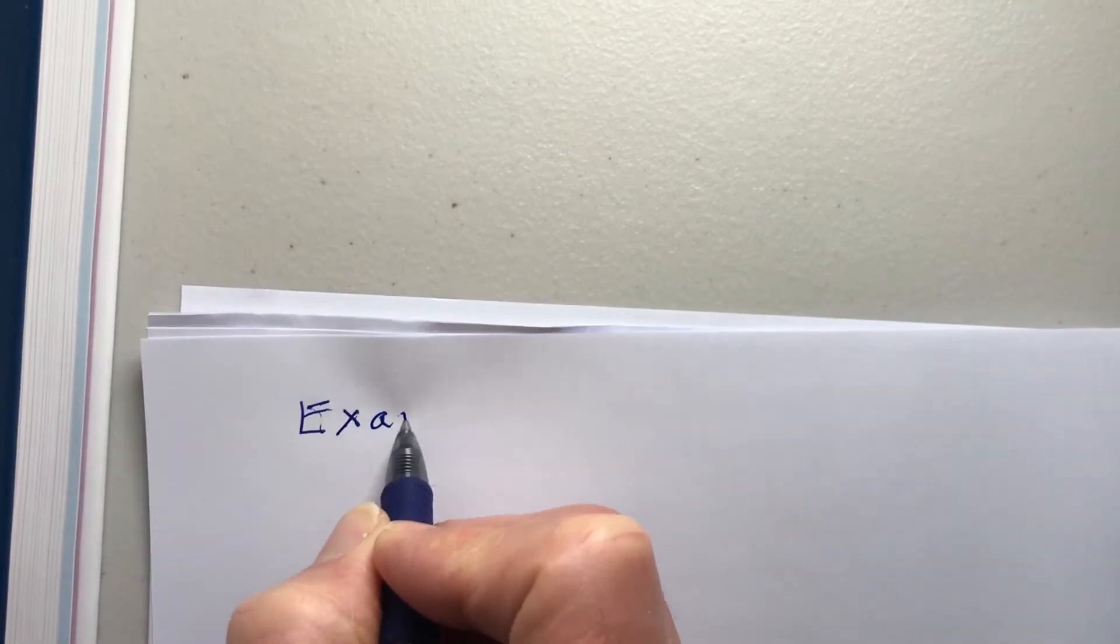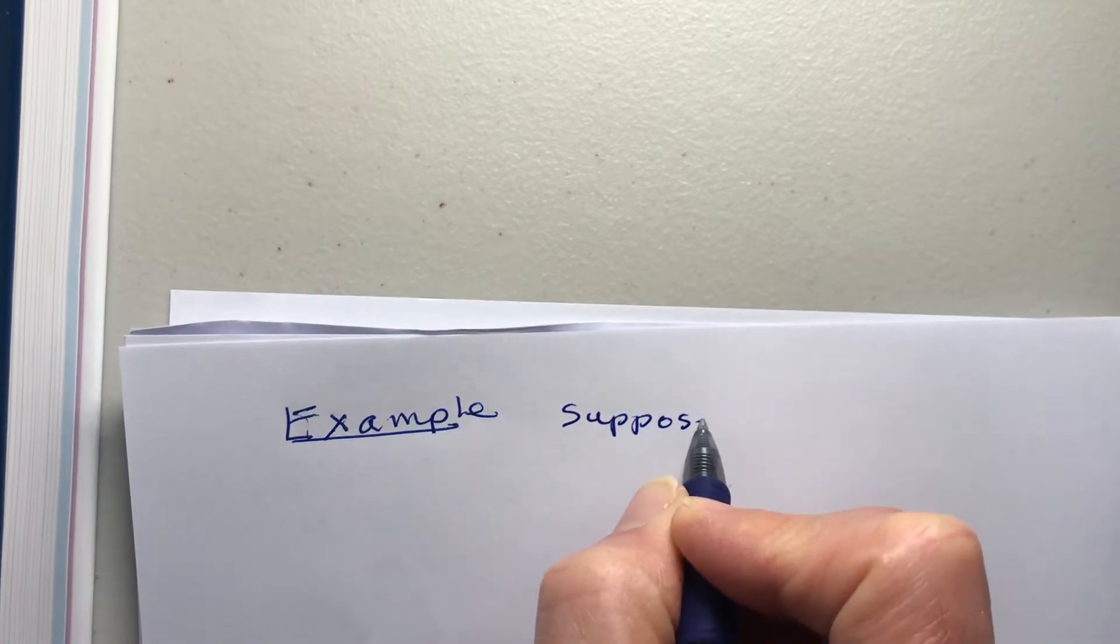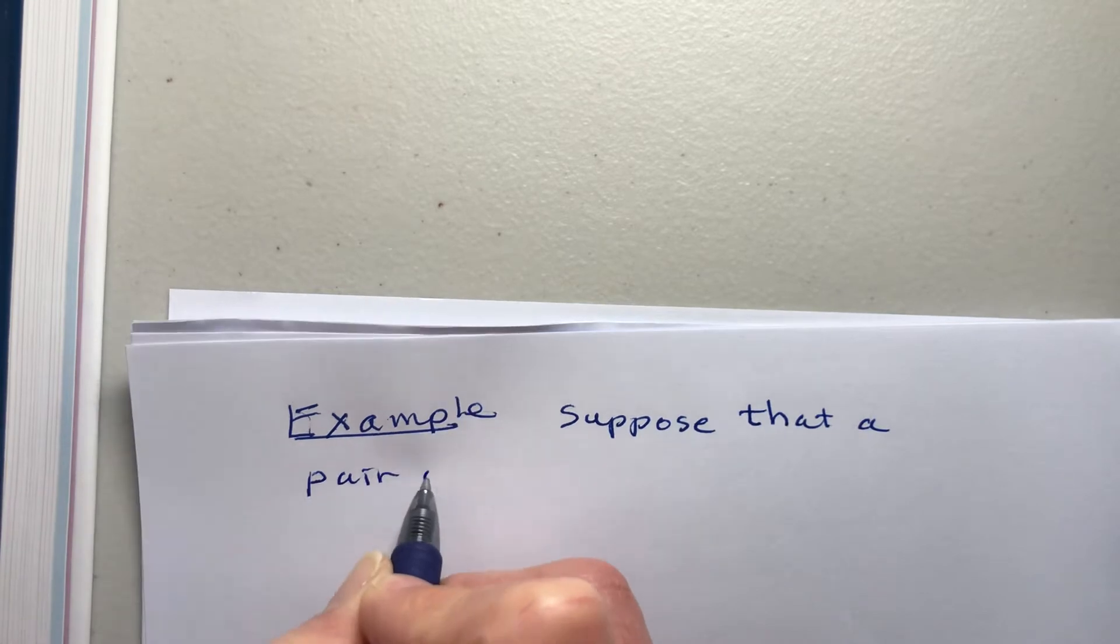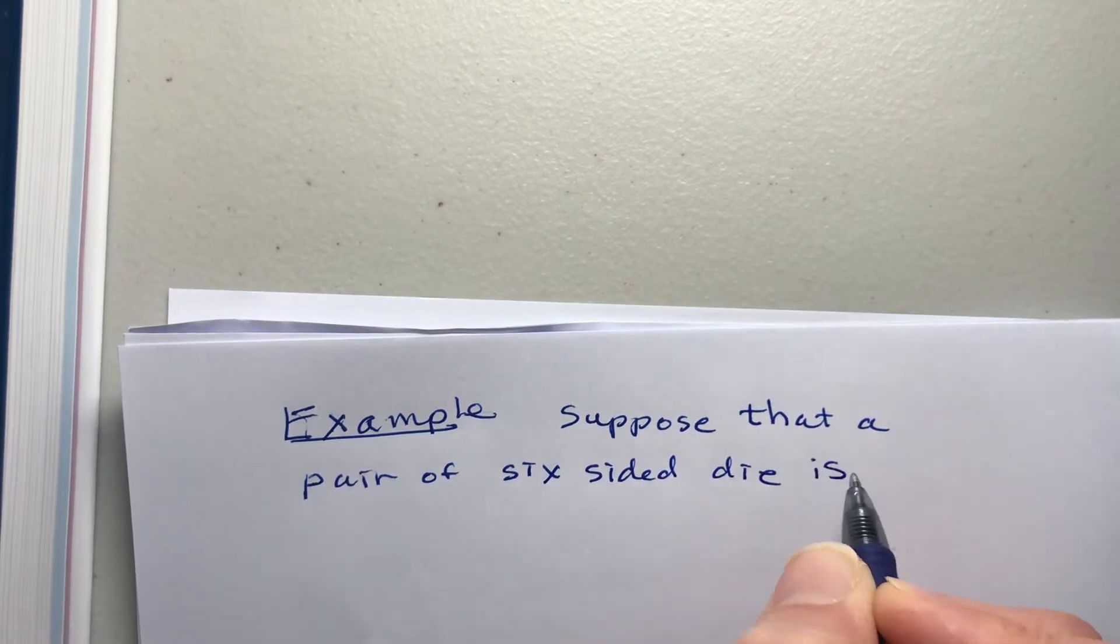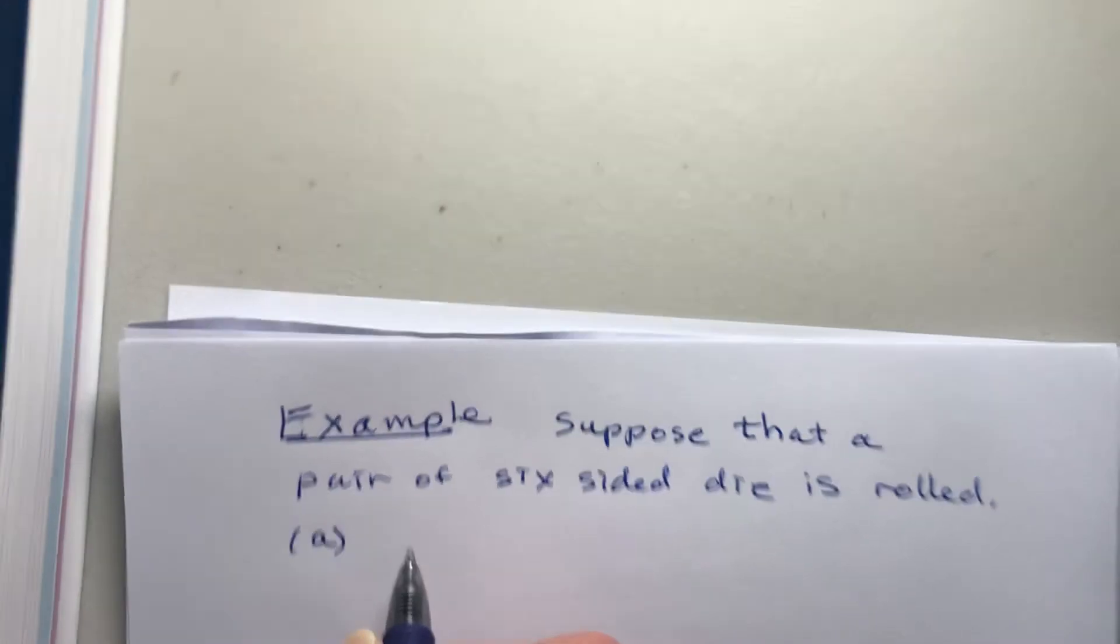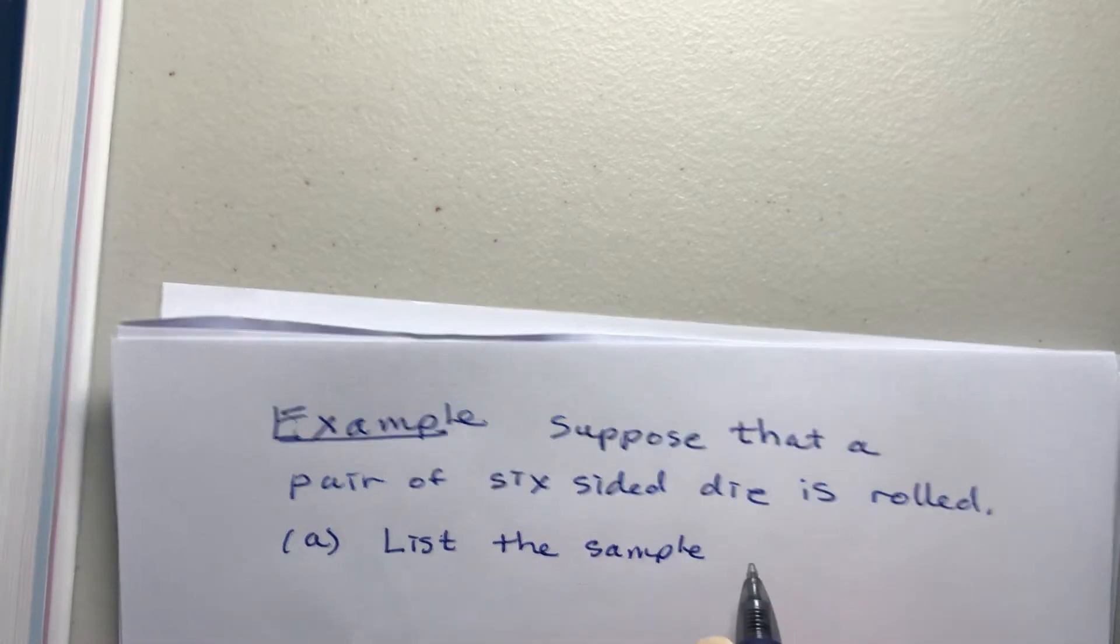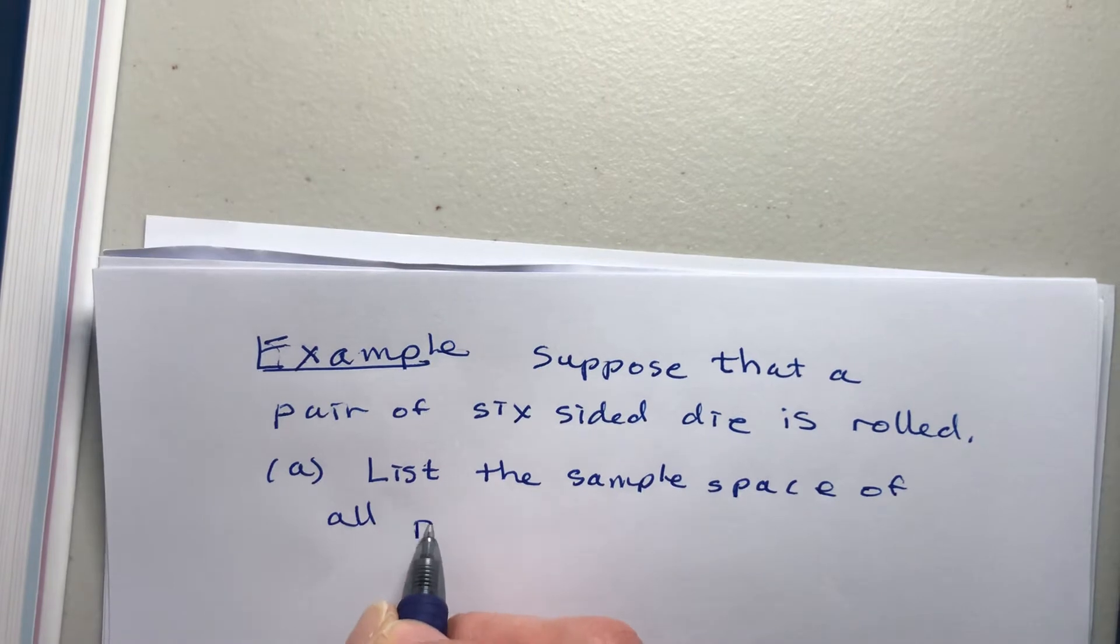In this example, we find the probability of an event occurring by counting. So what we do is start off with the experiment where a pair of six-sided dice is rolled. A list is the sample space of all possible outcomes.